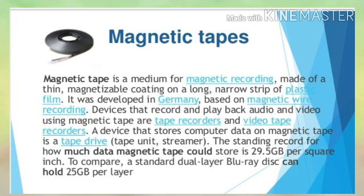Magnetic tape is a medium for magnetic recording, made up of a thin magnetizable coating on a long, narrow strip of plastic film. It was developed in Germany based on magnetic wire recording. Devices that record and play back audio and video using magnetic tape are tape recorders and video tape recorders. A device that stores computer data on magnetic tape is a tape drive. The record for how much data magnetic tape could store is 29.5 GB per square inch.